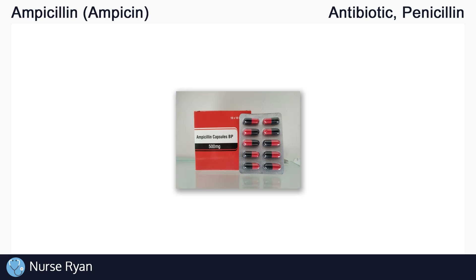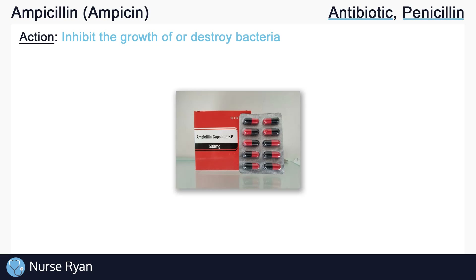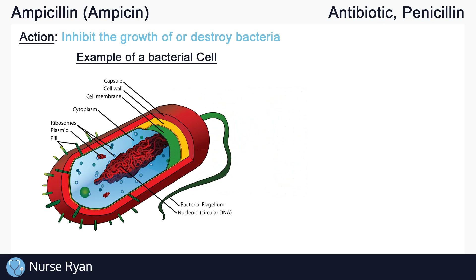Ampicillin is an antibiotic, meaning it inhibits the growth of or destroys bacteria. More specifically, ampicillin belongs to the penicillin class of antibiotics. Before we get into how penicillins work, let's very quickly review two different types of cells.